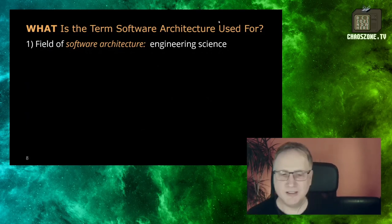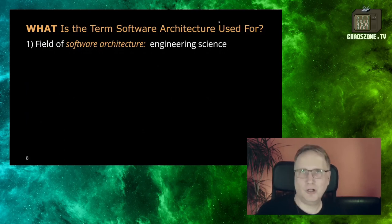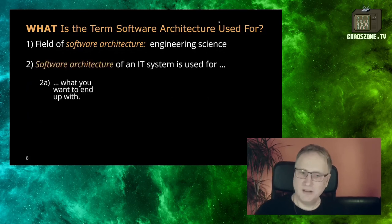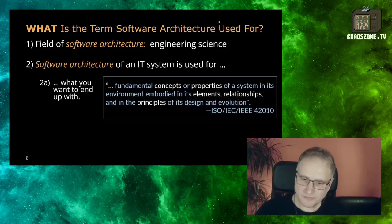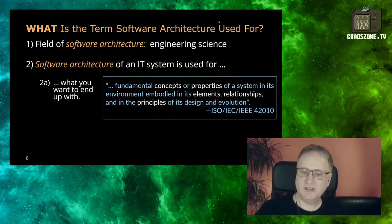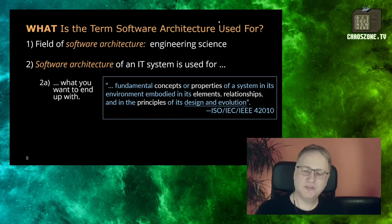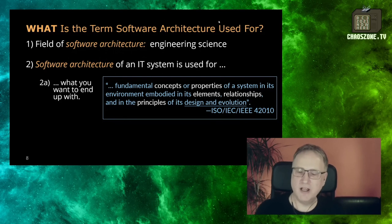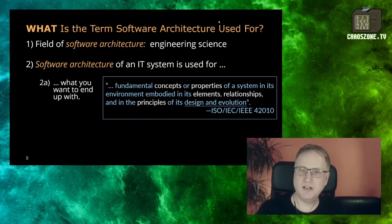Before we continue, let's clarify the term 'software architecture.' There's an ISO definition that is quite to the point. Software architecture is about the fundamental concepts or properties of a system — embodied in its elements, how it's decomposed into components and building blocks, how they relate to each other, how they relate to the environment. But the second part is important: it's also about the principles of its design and evolution — what rules and constraints you use to decompose your building blocks and govern communication between them.